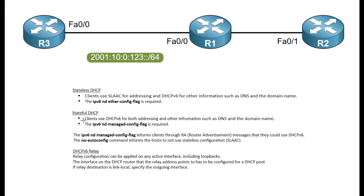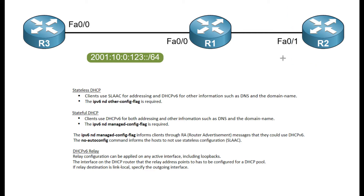For stateful DHCP, the host acquires the address itself and all other information from the DHCP router. With stateful DHCP, I'm going to make Router 2 the DHCP server and Router 1 will be the relay destination for that router.